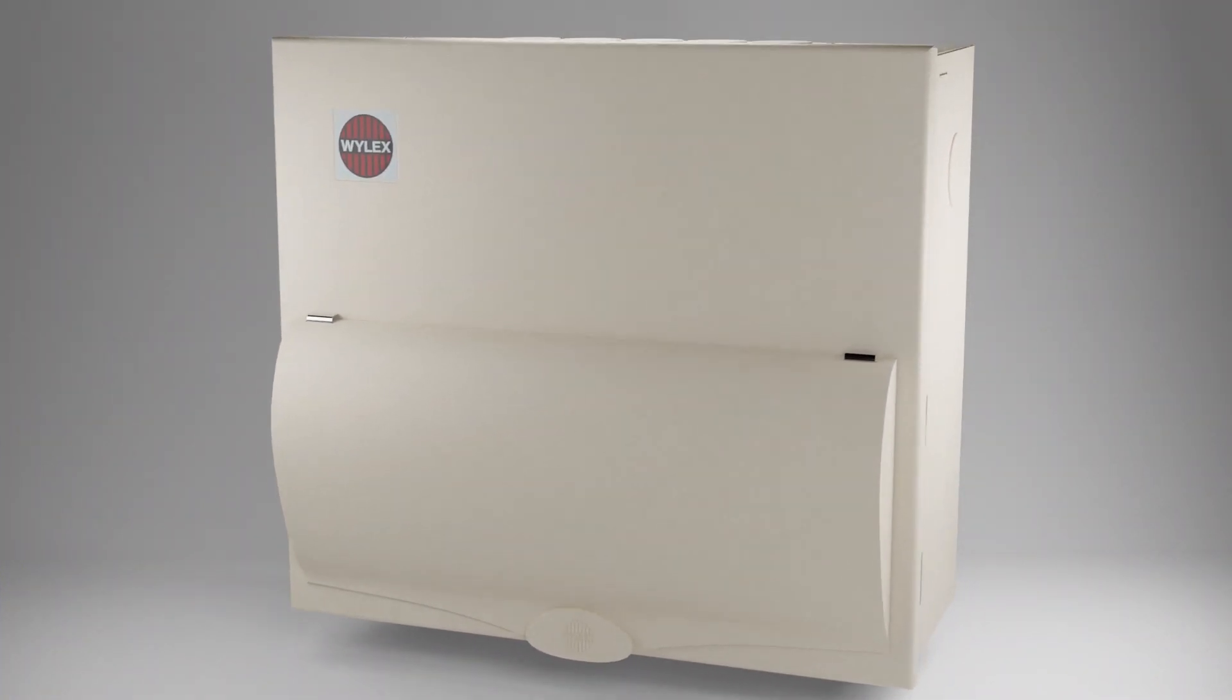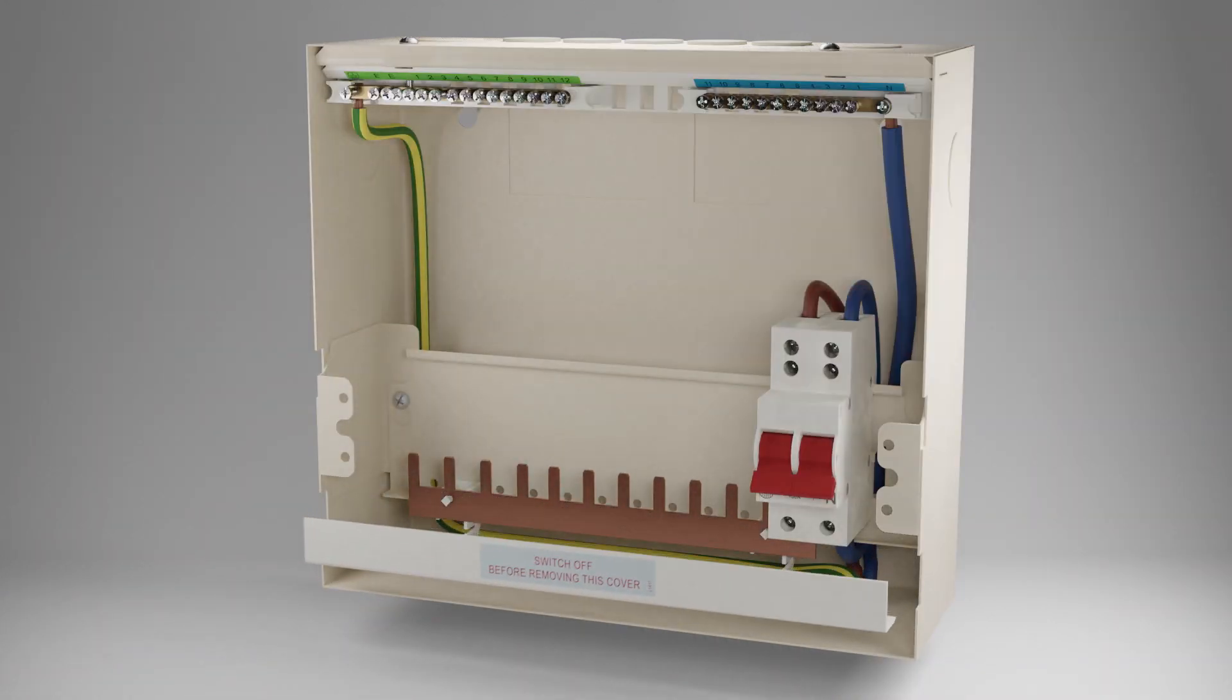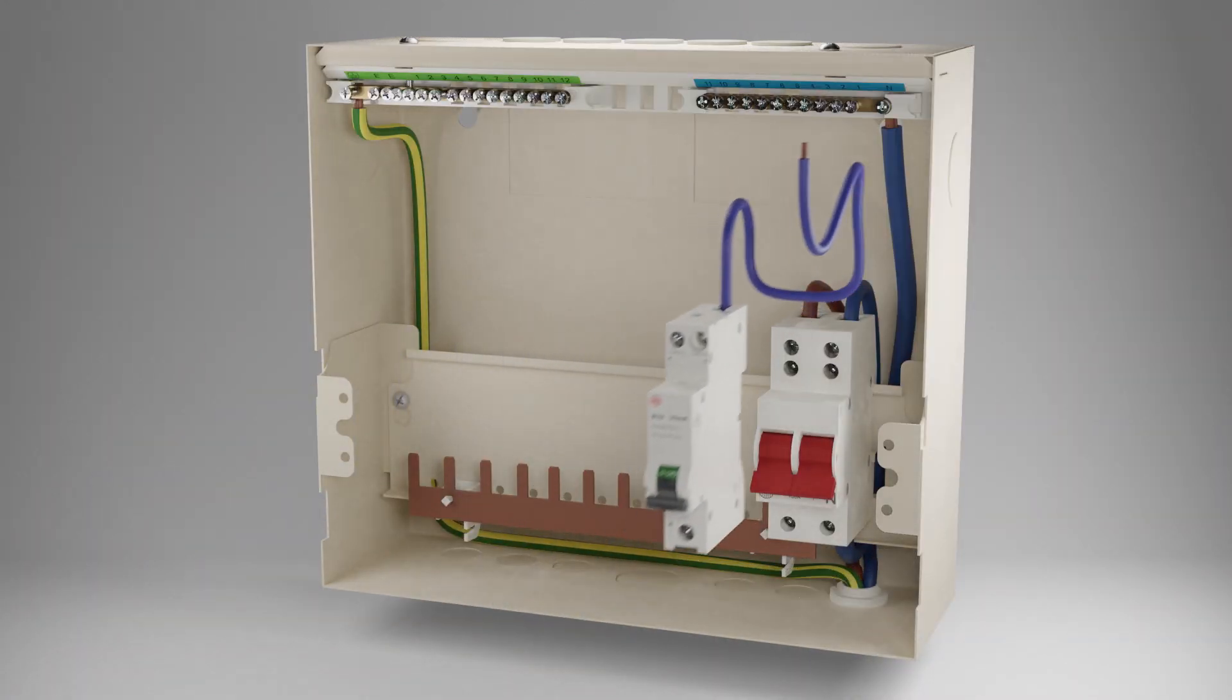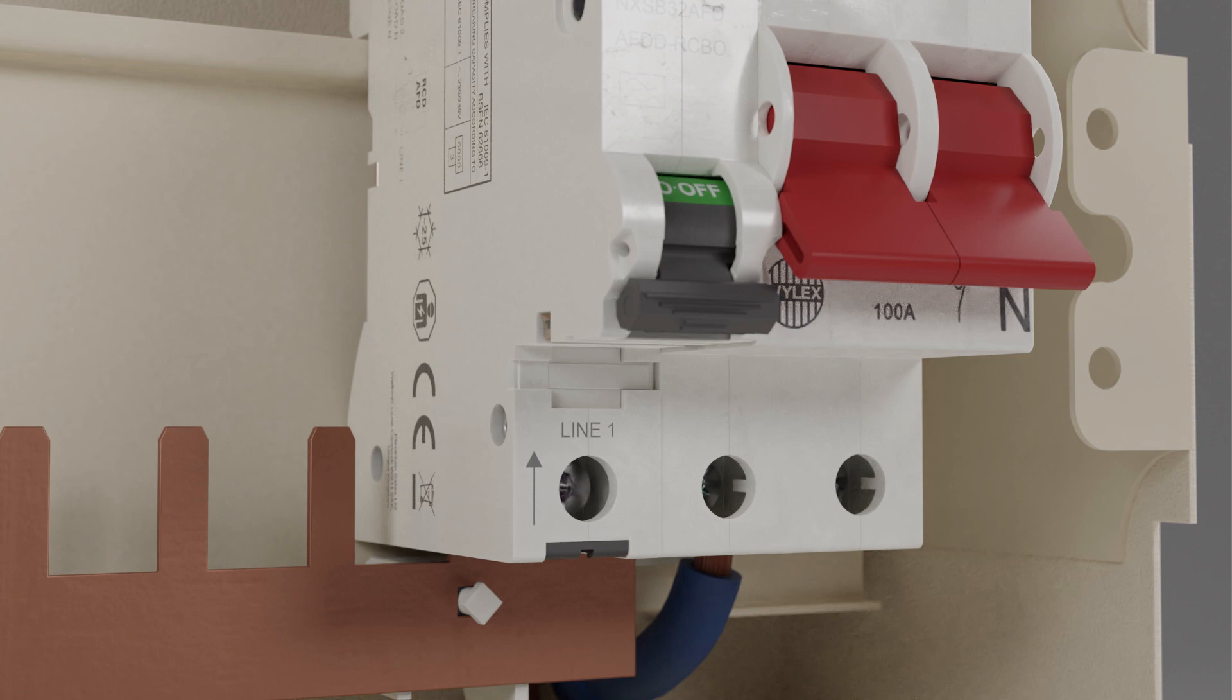Arc fault detection devices should be installed at the origin of each circuit that is being protected, i.e. installed in the consumer unit or distribution board.